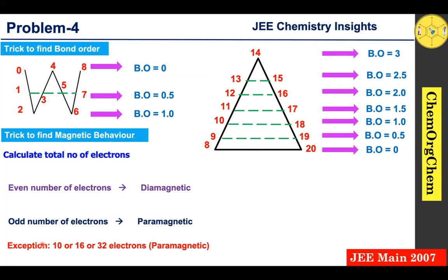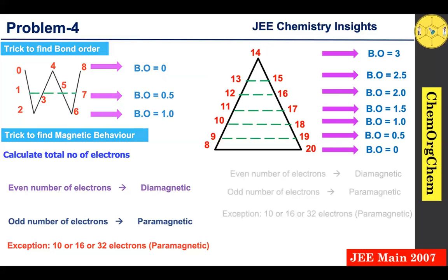Now we know how to find bond order and magnetic behavior using the simple trick. Let's go through each option one by one. The first option is the ionization process of C₂ to C₂⁺.